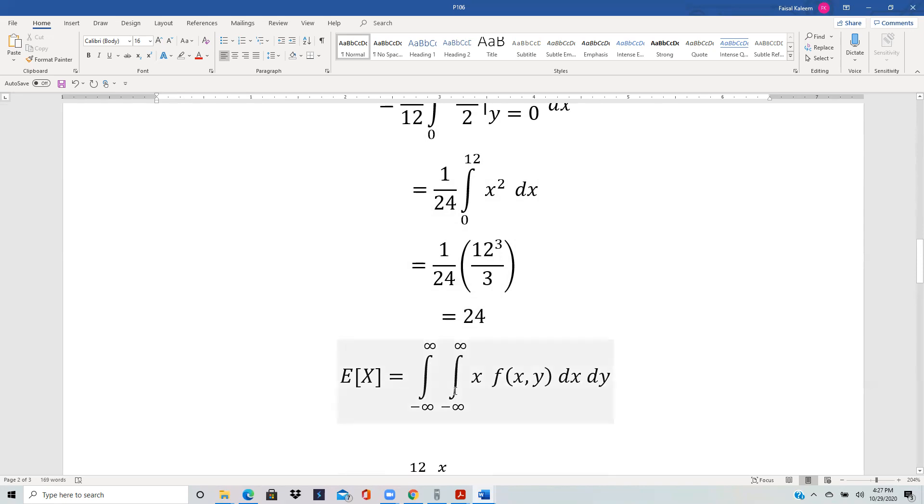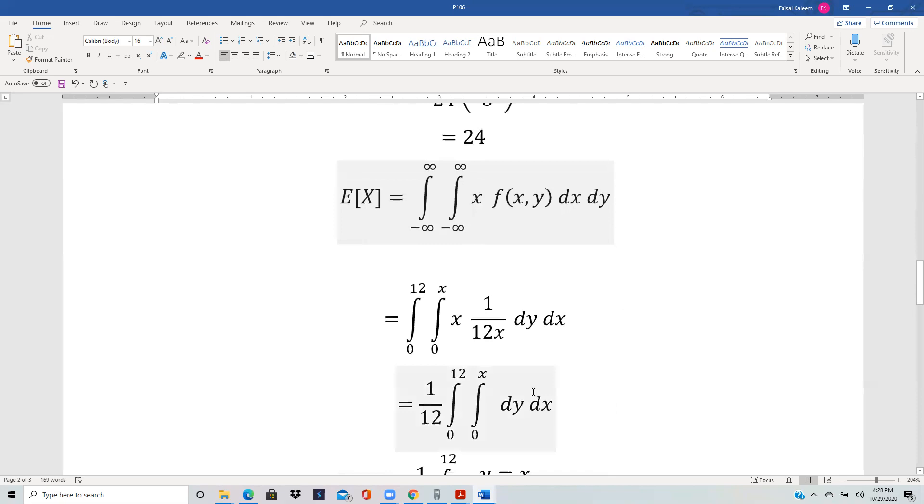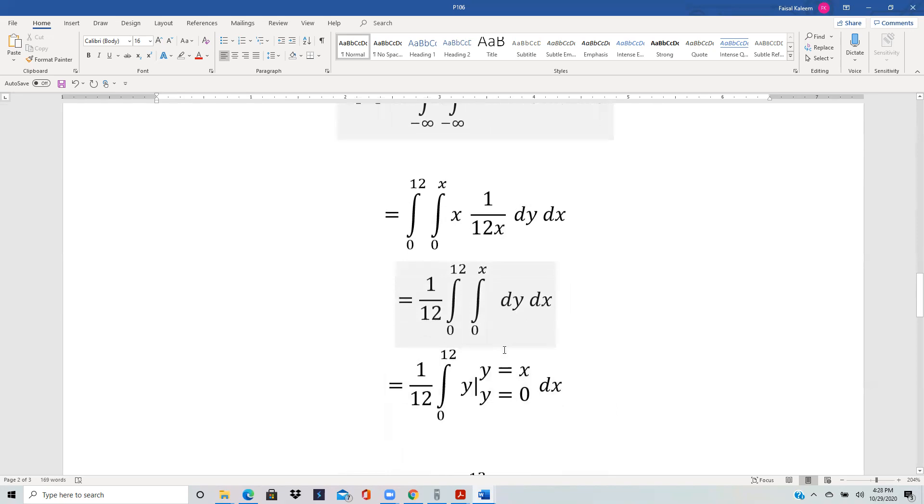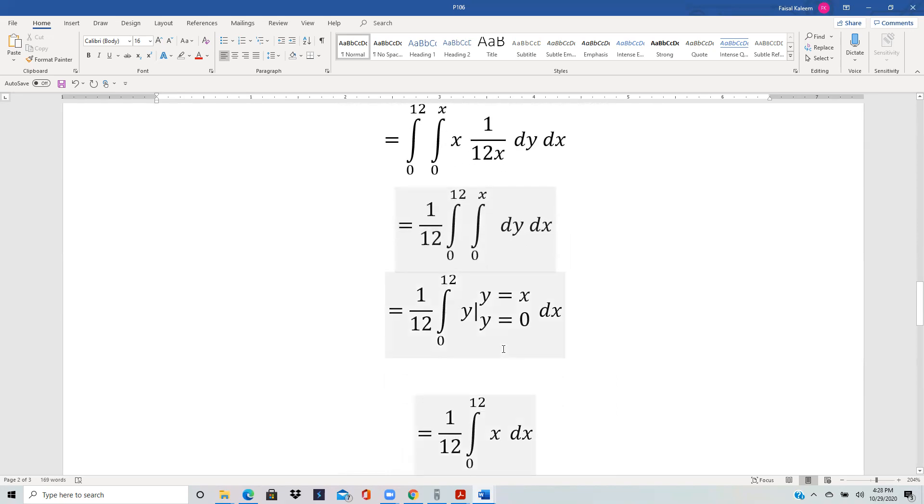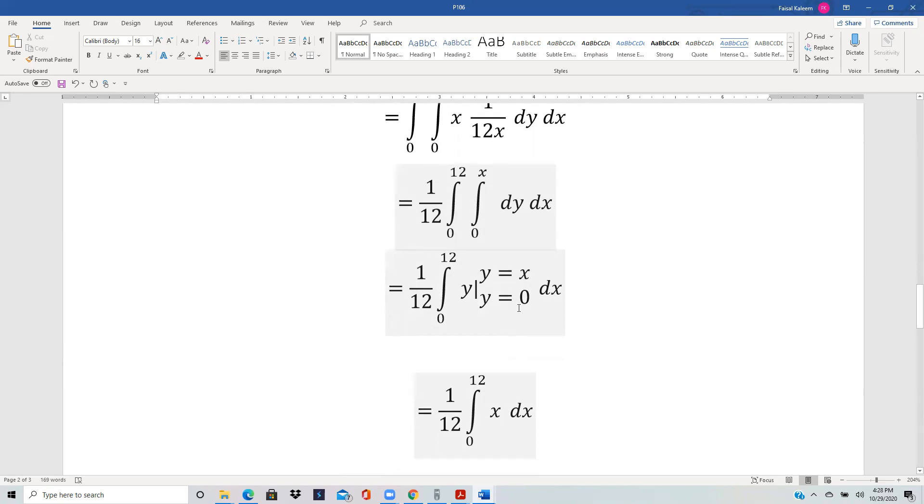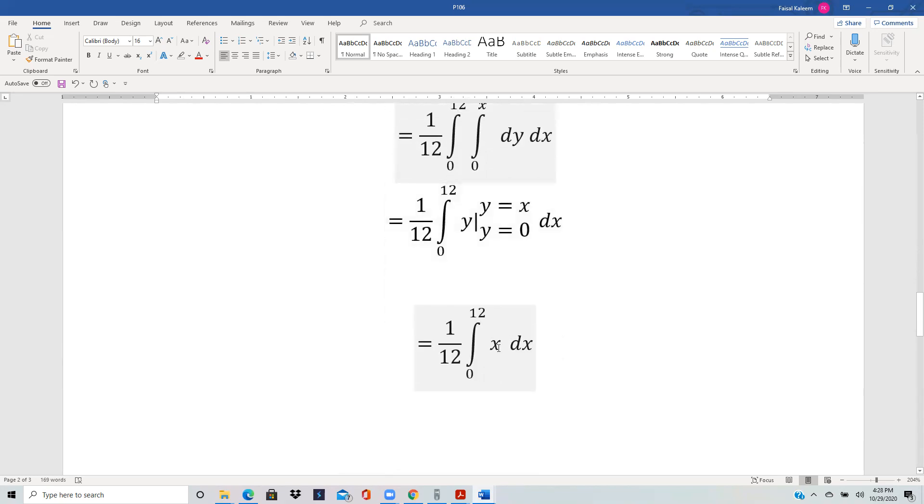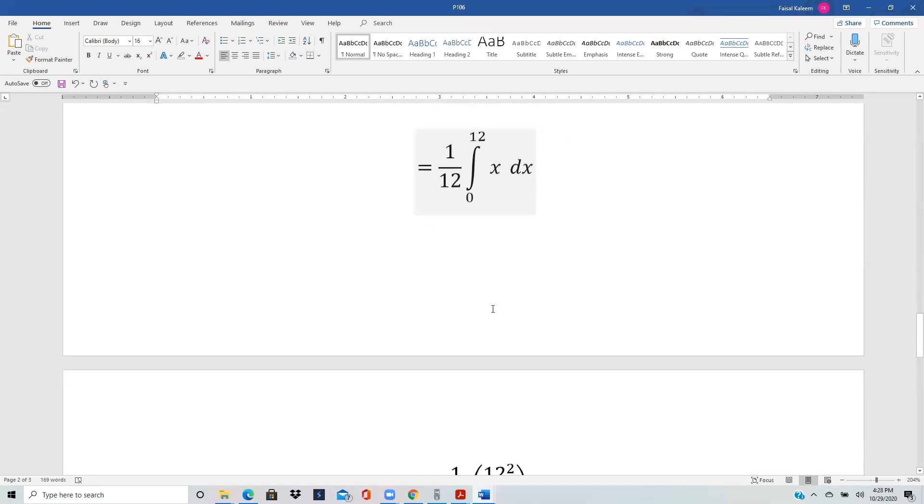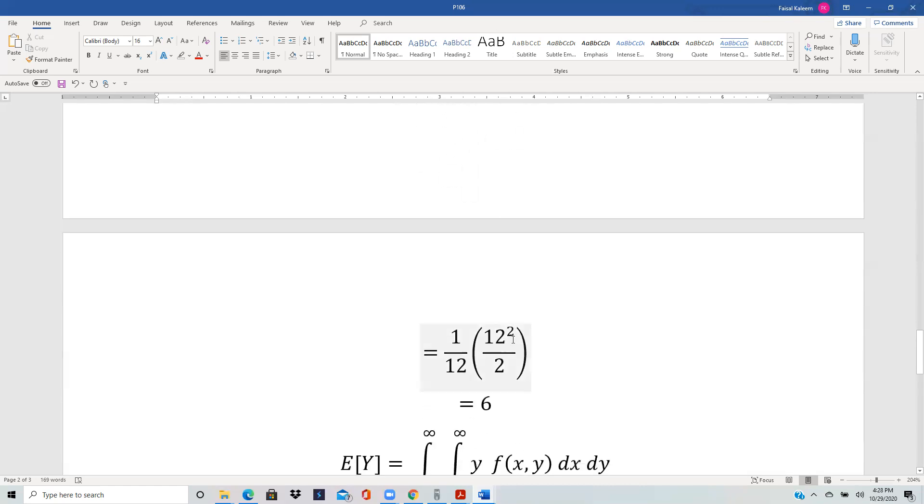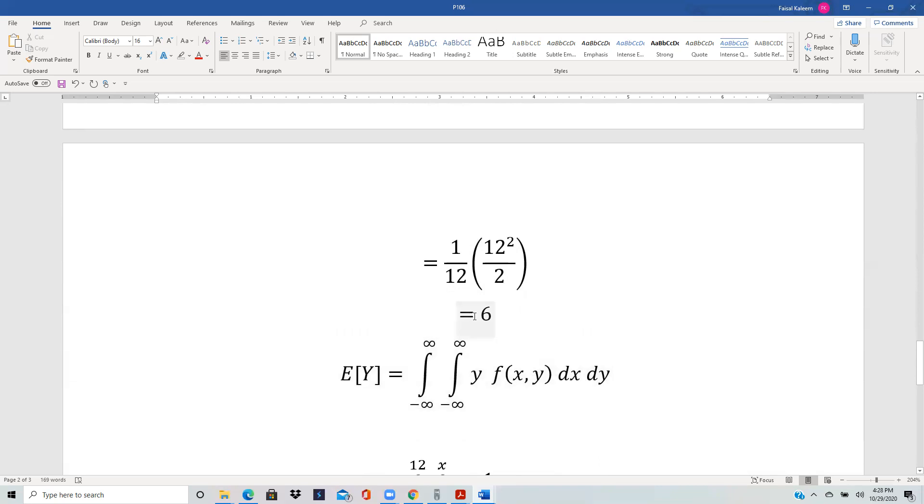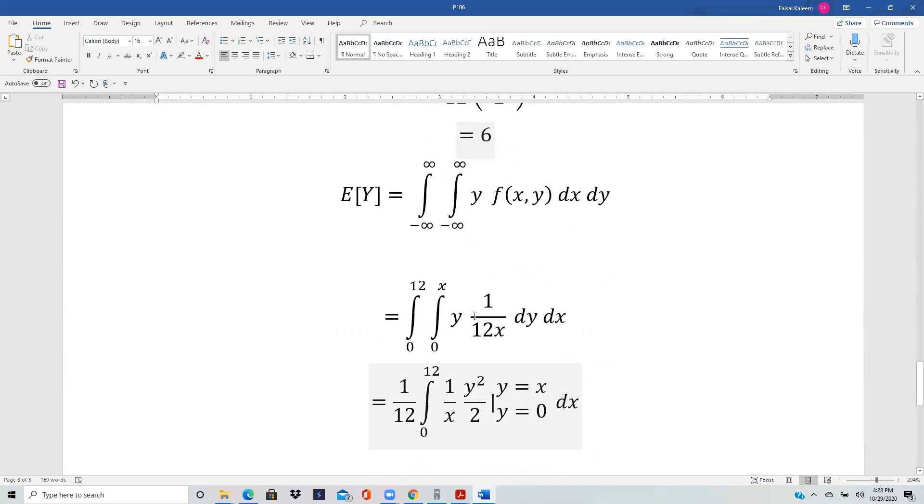E[X] similarly is the double integral of x against the PDF. X is cancelled out, 1 over 12 out, integral of dy is just y. After you put in the limits, y 0 to x, you get x minus 0, and then the integral of this is just x squared by 2, which will be 12 squared by 2, and then you get 6.